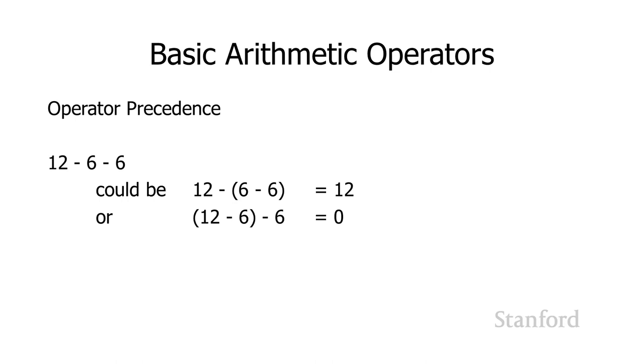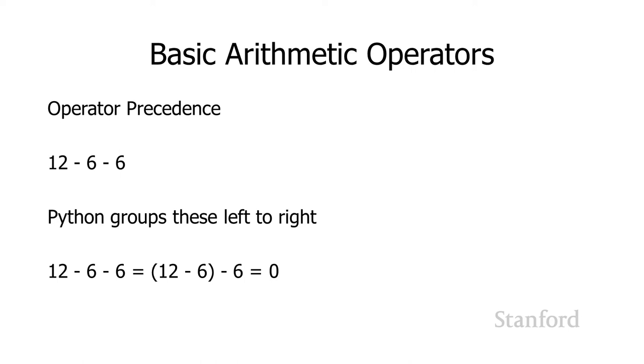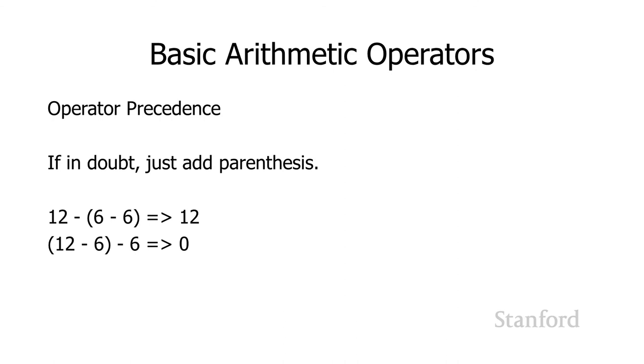Another area where it's kind of ambiguous is the order in which operations will take place if we've got the same operation. 12 minus 6 minus 6 could be 12 minus 6 minus 6, which would give us 12, or it could be 12 minus 6 minus 6, which would give us 0. Here, Python is going to group these from left to right. So 12 minus 6 minus 6 is actually 12 minus 6 minus 6, which would give us a 0. If you're ever in doubt and you're not really sure what the precedence operators are, just put in parentheses. By using the parentheses, you completely control what order these things get carried out. It's totally acceptable to put in extra parentheses. I often put in parentheses to emphasize what's really going on.